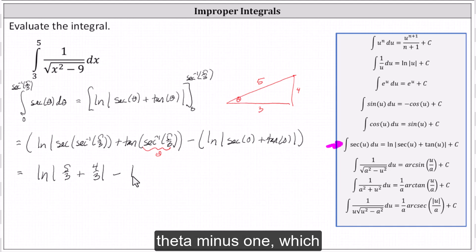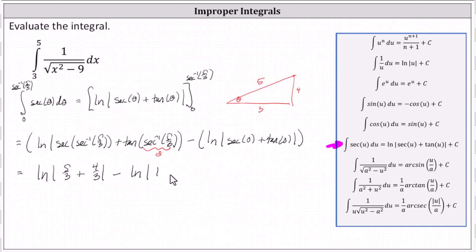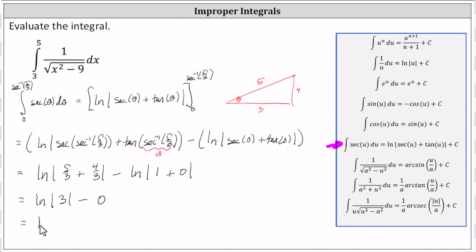And then we have minus natural log absolute value of secant zero plus tangent zero. Secant zero equals one and tangent zero equals zero. Simplifying, we have natural log absolute value of five-thirds plus four-thirds, which is nine-thirds or three, minus natural log of one, which is zero. We can drop the absolute value because three is positive. The exact value of the definite integral is natural log three.